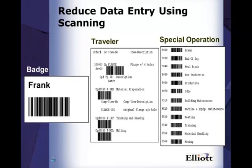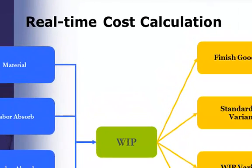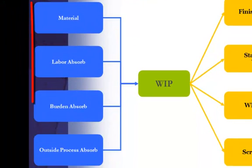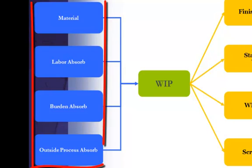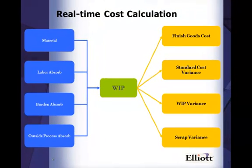Unlike the legacy manufacturing process, which requires a job costing module to determine item costs, WorkOrder Plus provides real-time cost calculation. The materials, labor, overhead, and outside processing are captured real-time as each operation is reported.